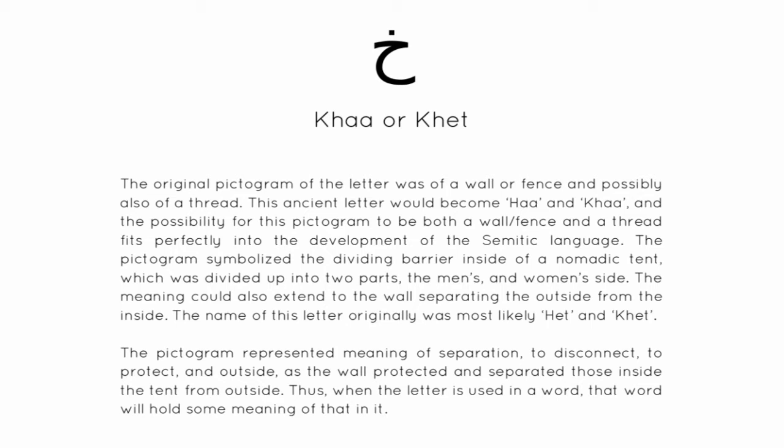The pictogram symbolized the dividing barrier inside of a nomadic tent, which was divided up into two parts — the men's and women's side. The meaning could also extend to the wall separating the outside from the inside. The name of this letter was most likely Ha' or Kert, and the pictogram represented meaning of separation, to disconnect, to protect, and outside, as the wall protected and separated those inside the tent from the outside.